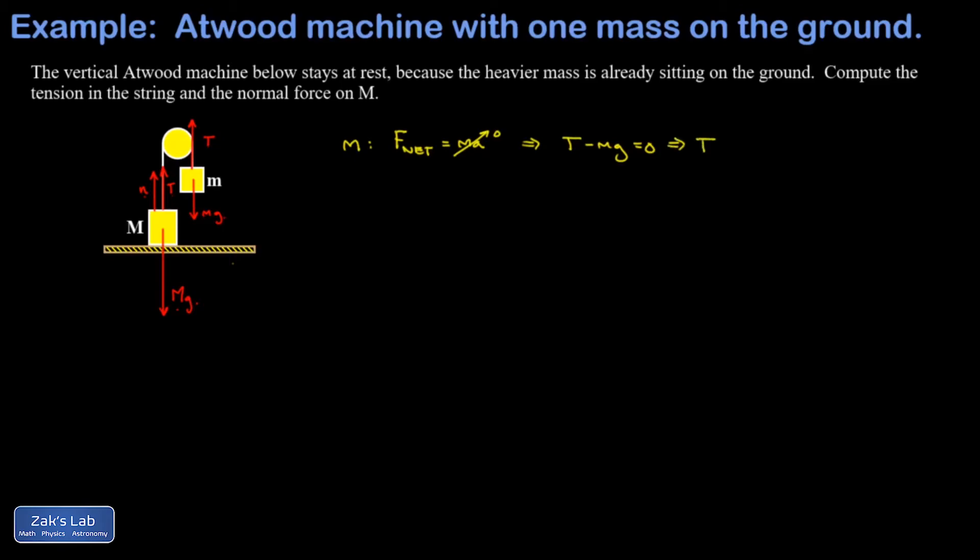Alternatively, we could just say hey, I know this thing isn't accelerating, so the upward and downward forces better balance each other. So F up is equal to F down. That gets you to the same answer, so either way.